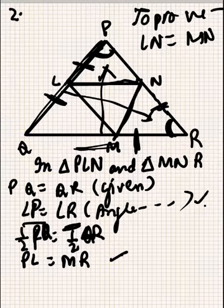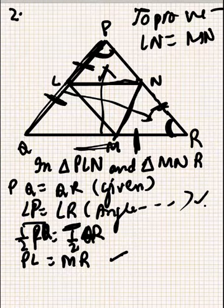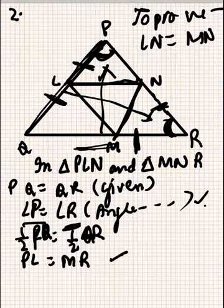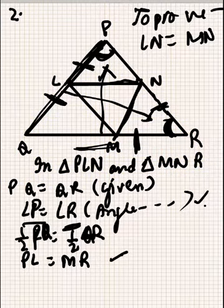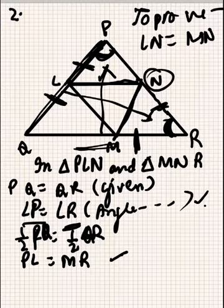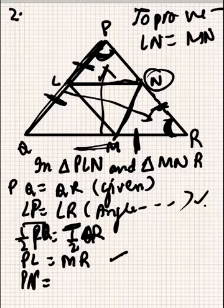Now what's next? We can see that in the question it was given that N is the midpoint of PR. It means PN will be equal to NR.